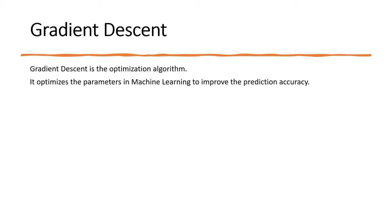Gradient descent is the optimization algorithm. It optimizes the parameters in machine learning to improve the prediction accuracy.